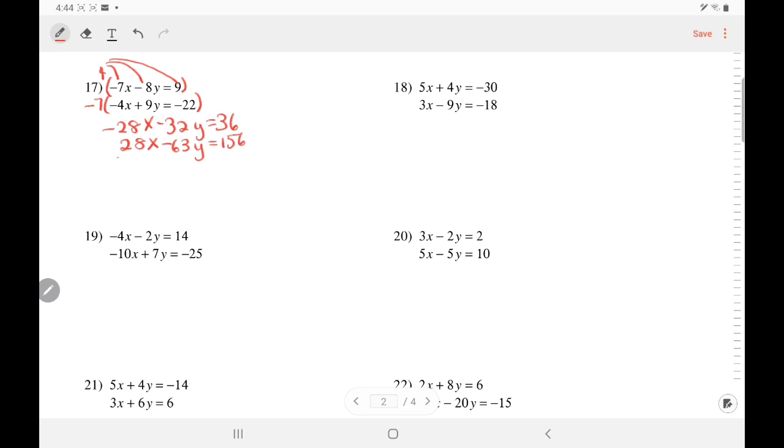When we add these equations, the x's will cancel because they are opposites. Adding these negative numbers, it became even more negative, negative 95y, and adding these, well that's not a 6, it's a 4. If you add them, it's 190.